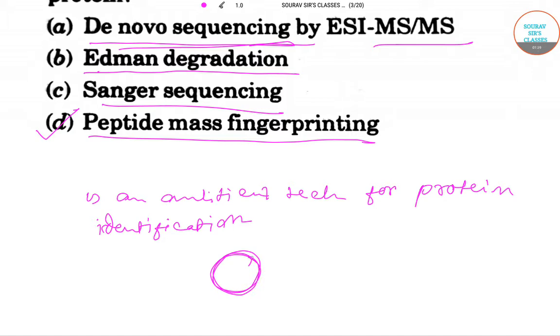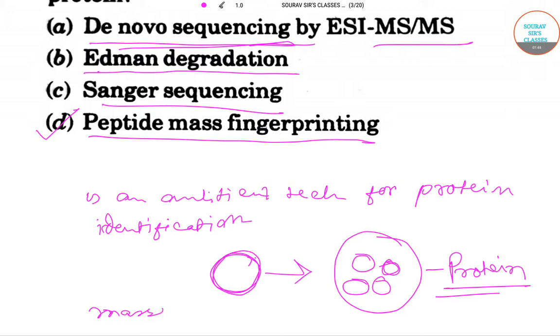In this technique, the unknown protein of interest is first cleaved into smaller pieces or smaller proteins or peptides. Then we can identify the target protein, but the masses cannot be analyzed